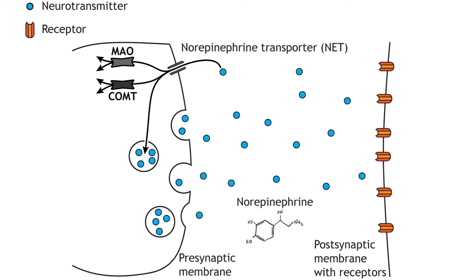Norepinephrine follows the same pathway as dopamine. Reuptake into the presynaptic terminal occurs via the norepinephrine transporter, and then the transmitter is either degraded within the cell by MAO or COMT, or repackaged into synaptic vesicles.